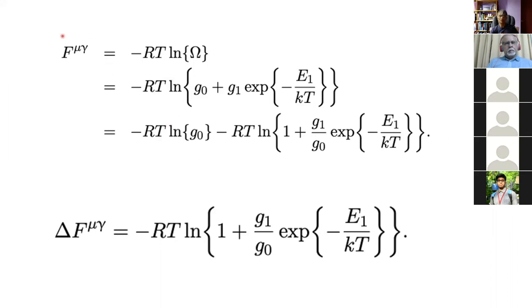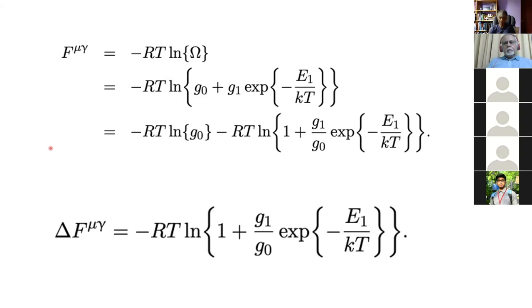If I want to work out the difference in energy between the state where all atoms are in the ground state and at a particular temperature T, that gives us the difference in Helmholtz free energy. The partition function tells us how atoms are partitioned over different energy states, and taking its logarithm and multiplying by RT gives us the Helmholtz free energy for that system.